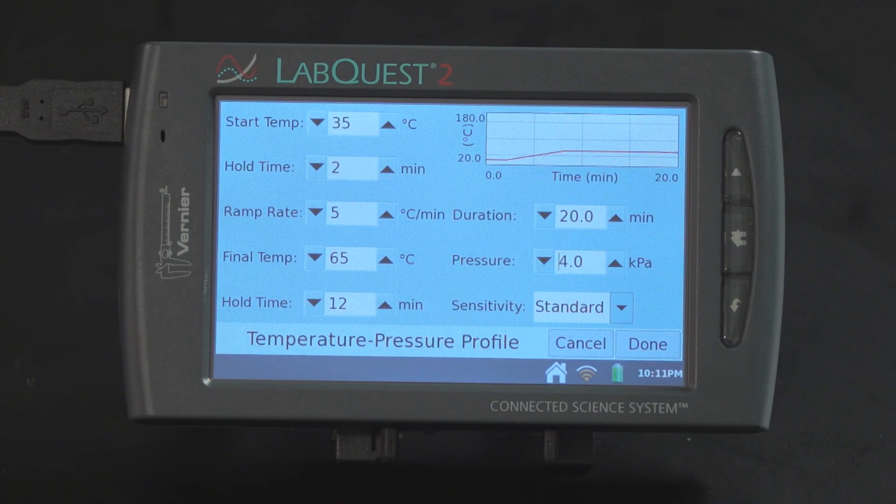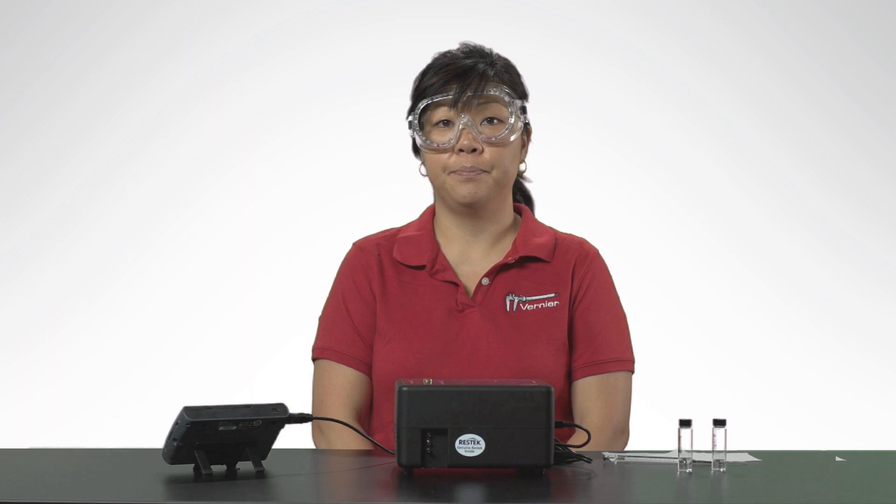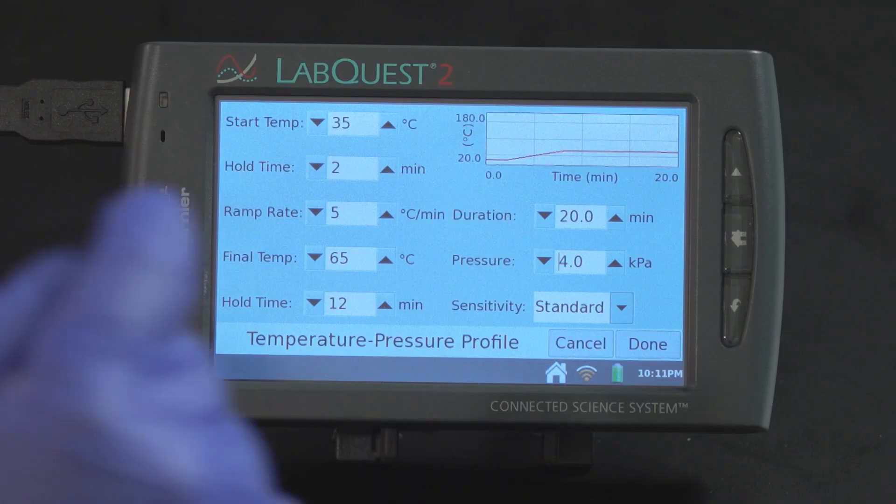Data collection will end after 20 minutes. Make sure the duration of the run is long enough to ensure all the compounds have passed through the column. Select Done to initiate Mini-GC warmup.